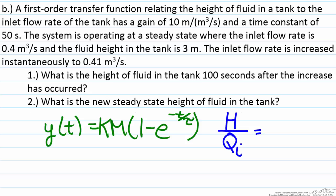It says that is a first order transfer function with a gain of ten in units of height per volumetric flow rate, our time constant is given as fifty seconds. That gives us that our transfer function is ten over fifty s plus one. It gives us information about the steady state system where the inlet flow rate is .4 and the fluid height in the tank is three meters, and the inlet flow rate is increased instantaneously to .41 cubic meters per second.